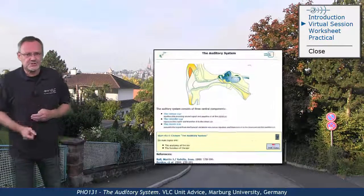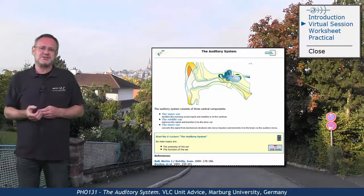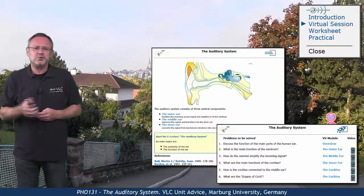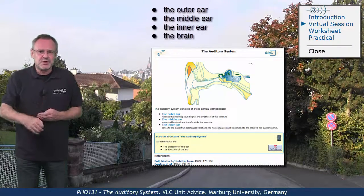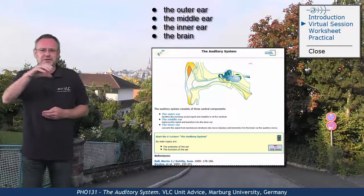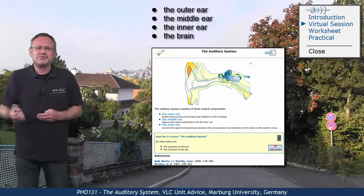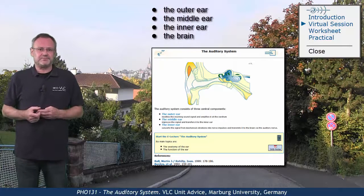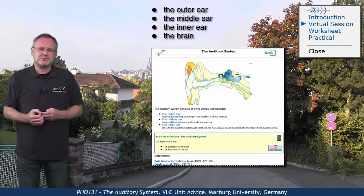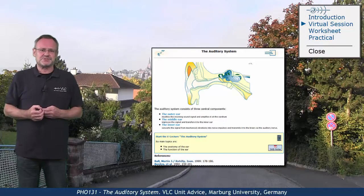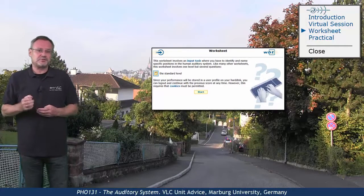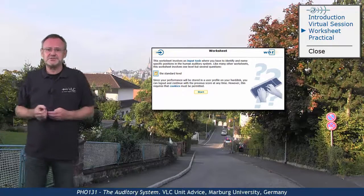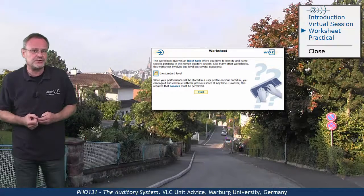In the virtual session, where you can use the question sheet as default guidance, we will look at the anatomy and the physiology of the human hearing mechanism from the outer ear to the inner ear, and we will also consider the links into the brain. We need these details to understand how the speech signal is processed. The mastery worksheet is an input task where you have to identify and name specific positions in the human auditory system.